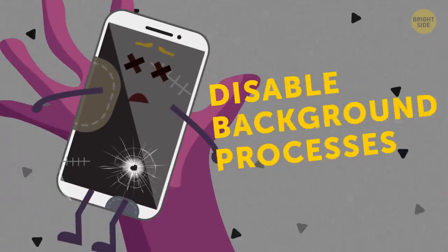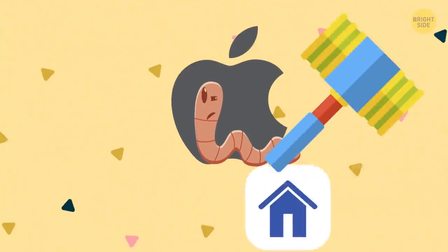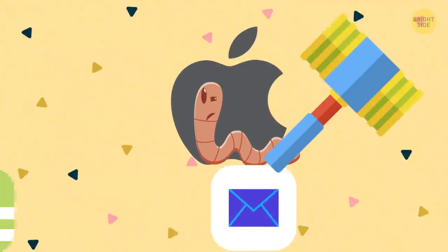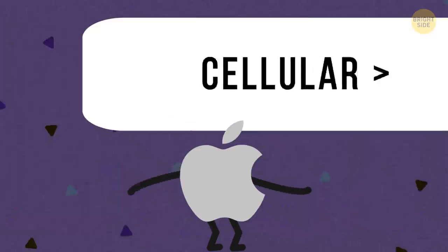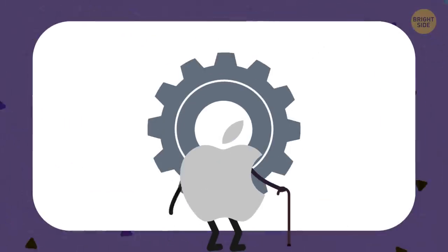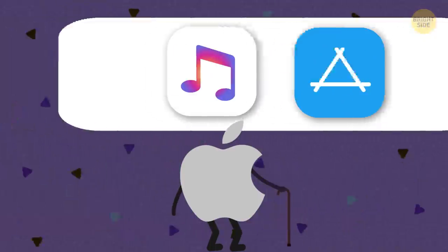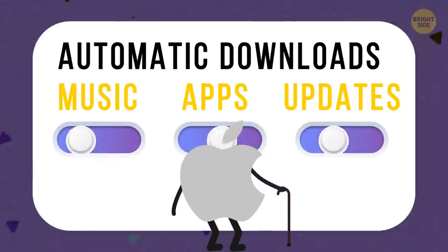Disable Automatic Background Processes. iOS 13 has a low data mode that doesn't let apps update or download any data, including emails, in the background. You can turn this mode ON in Settings, Cellular, Cellular Data Options. If you have an older iOS, you should turn off Background App Refresh in the settings. You'll also need to go to iTunes and App Store and switch off music, apps, and updates in the Automatic Downloads sections.